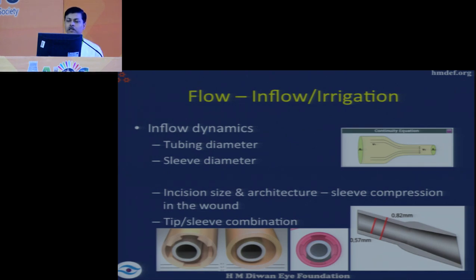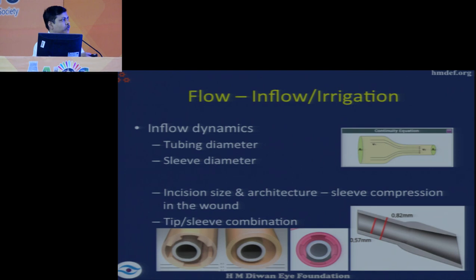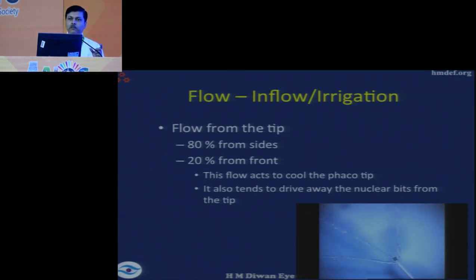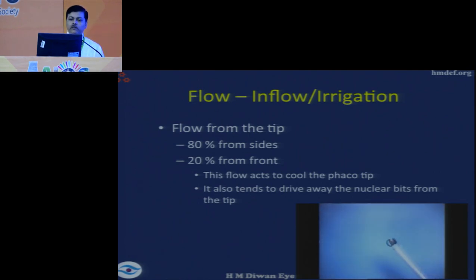Inflow dynamics depends on tubing diameter and sleeve diameter, incision size and architecture — that is, how the sleeve is being compressed against the phaco tip by the wound — and the tip-sleeve combination. For smaller phaco tip and sleeve combinations, extra channels of fluid flow are created beside the tube to compensate. Ultimately, it is the disparity between the sleeve and the tip which allows the fluid to enter the eye. On video, 80% of irrigation comes from the side and 20% from around the tip, which cools the tip but also drives small bits of nucleus away from it — working against aspiration.